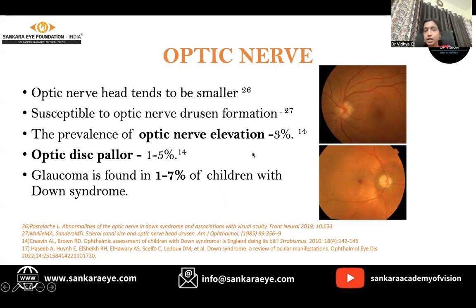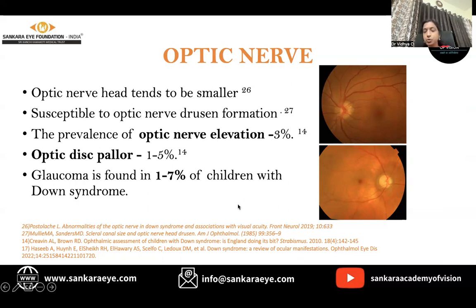The prevalence of optic nerve elevation is seen in about 3%. Optic disc pallor is supposed to occur in about 5% of these children. Glaucoma, though rare, is seen in about 1% to 7% of children with Down syndrome.